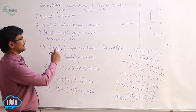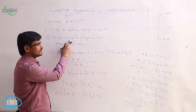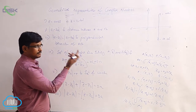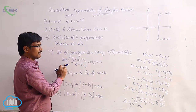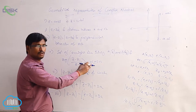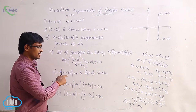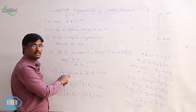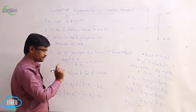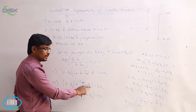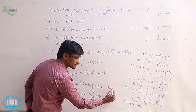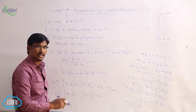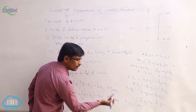Similarly, mod(z minus z1) equal to mod(z minus z2) is the perpendicular bisector of the line segment joining A and B. The equation of a straight line joining two points in complex numbers is: arg((z minus z1) divided by (z1 minus z2)) equals 0 or 180 degrees. The equation of a circle is mod(z minus z0) equal to r, where z0 is the center and r is the radius. mod(z minus z1) plus mod(z minus z2) equal to 2a is the equation of an ellipse, and mod(z minus z1) minus mod(z minus z2) equal to 2a is the equation of a hyperbola in the complex number system.